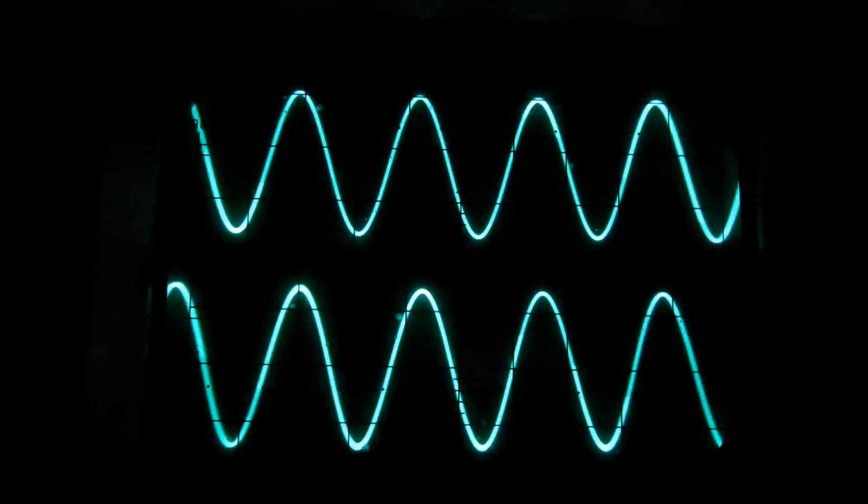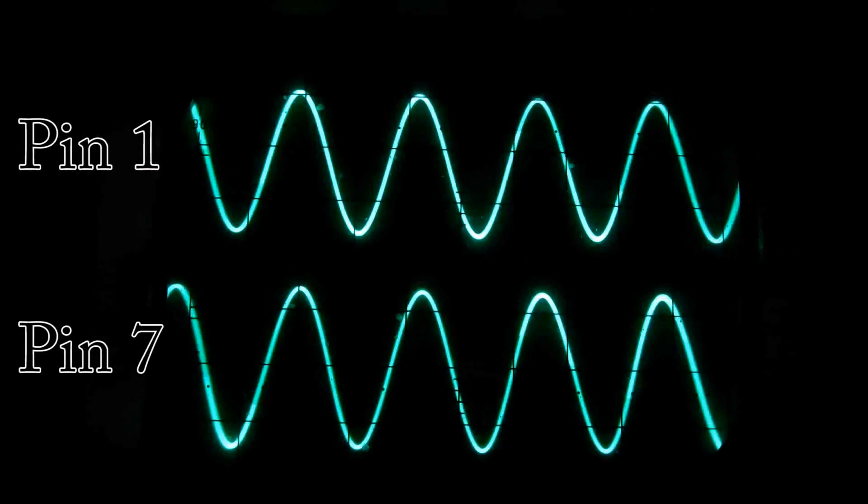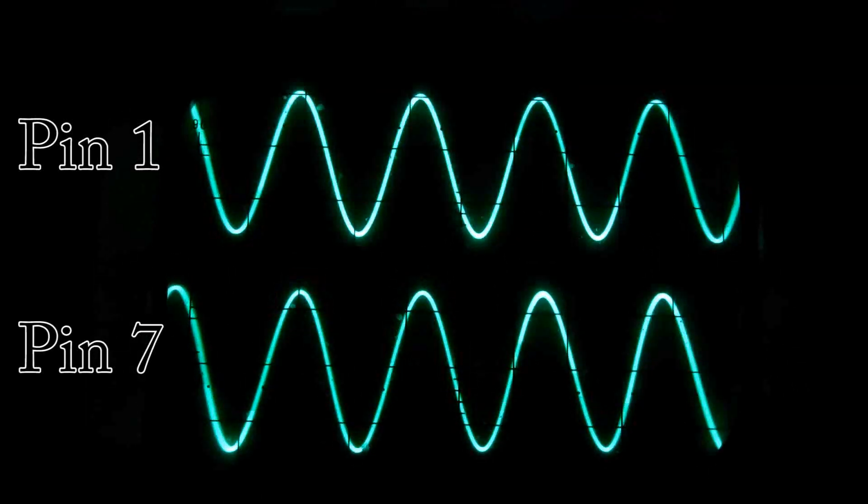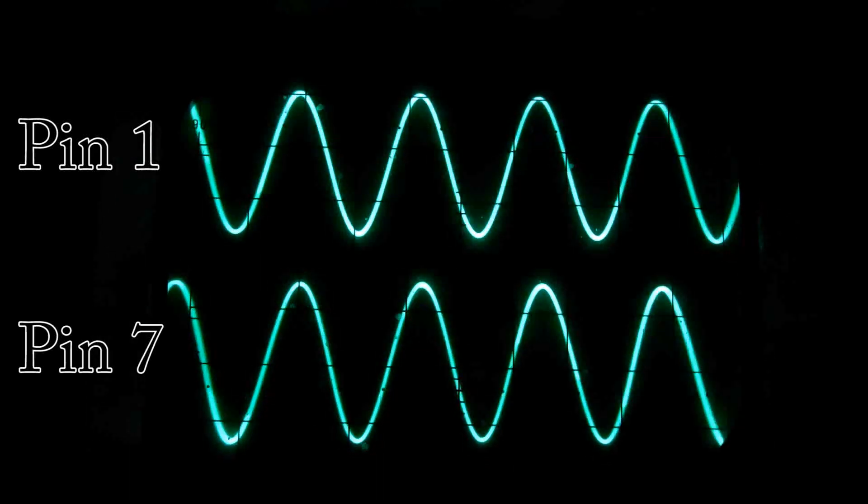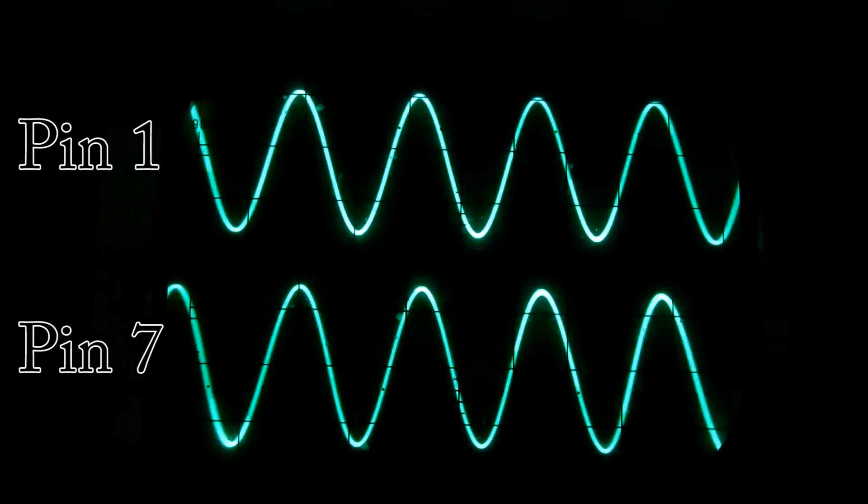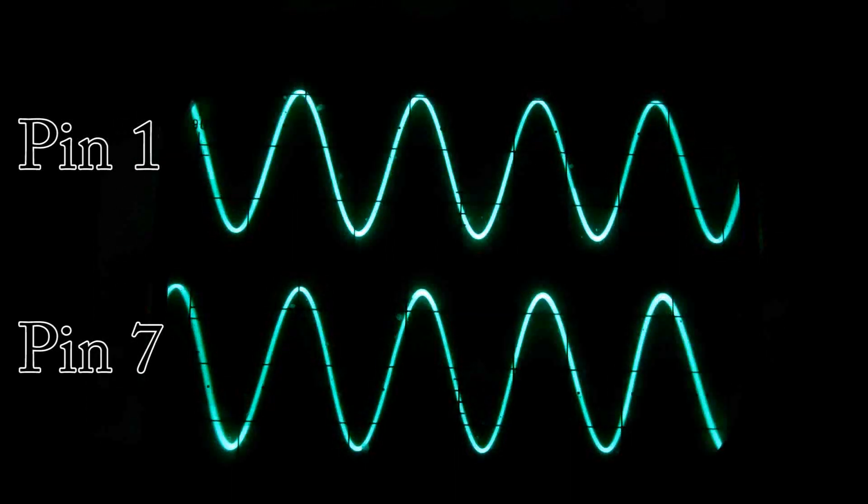I have a 300 hertz signal going through the amplifier. The bottom trace is from the plate on the tube on the left. The top trace is from the grid on the tube on the right, the audio output tube, the input to it.